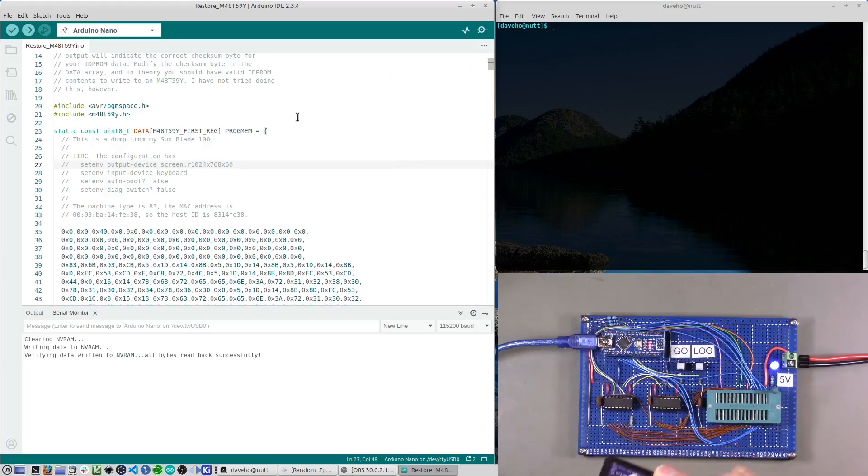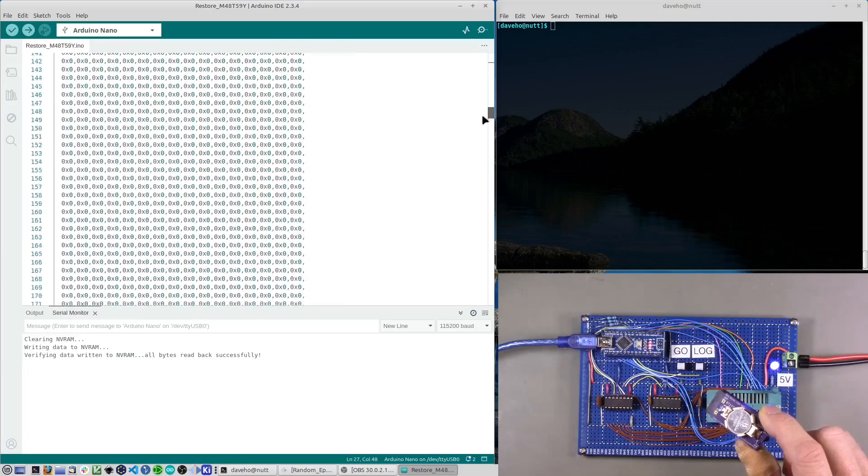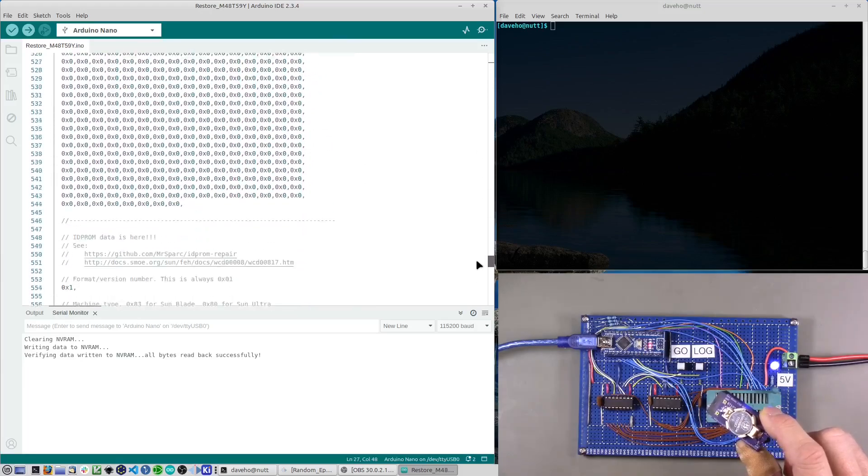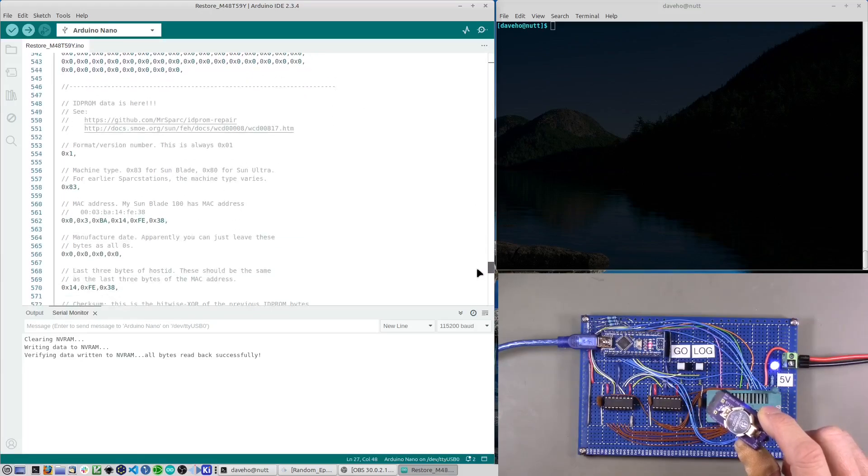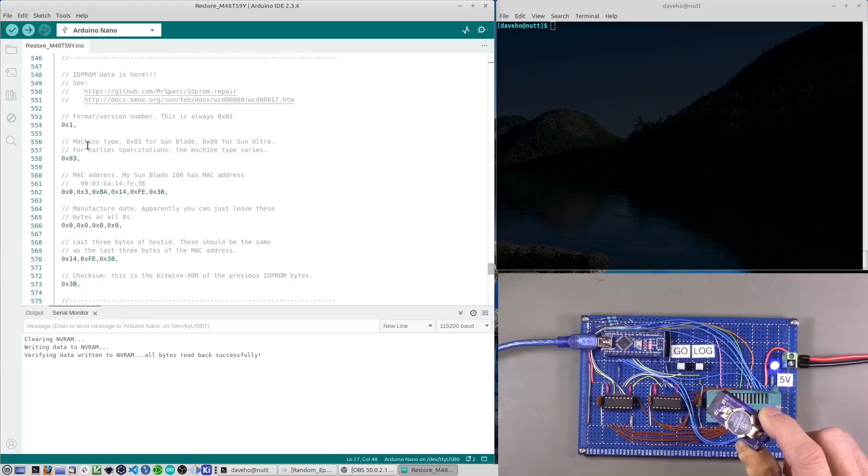One thing that I think you could potentially do that I haven't really tested is you could actually modify this start data. In particular, there are particular bytes that correspond to the ID PROM data that Sun workstations need. So you could edit this and then program the modified data into your device. That might give you a useful configuration for your Sun workstation.